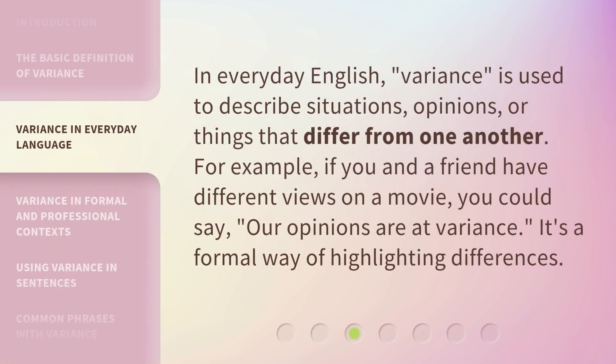In everyday English, variance is used to describe situations, opinions, or things that differ from one another. For example, if you and a friend have different views on a movie, you could say, 'our opinions are at variance.' It's a formal way of highlighting differences.